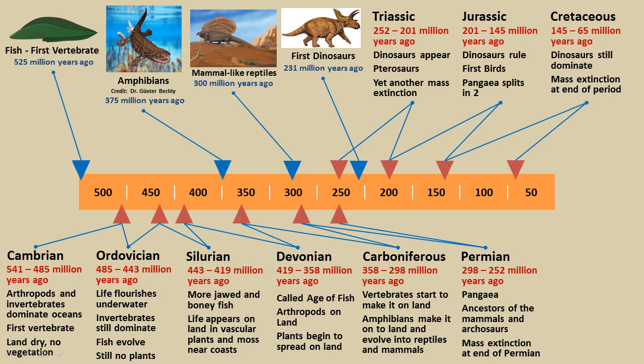At the tail end of the Permian, there was a mass extinction that saw a majority of the species on Earth wiped out, and that allowed the dinosaurs to become the dominant player in the next epoch — the Triassic. Dinosaurs do not appear until about midway through the Triassic, around 231 million years ago. Then, believe it or not, there's another mass extinction, but dinosaurs survived that event. And by the time we get to the Jurassic time period, dinosaurs rule the Earth.